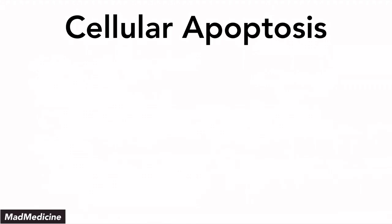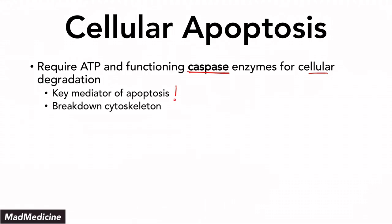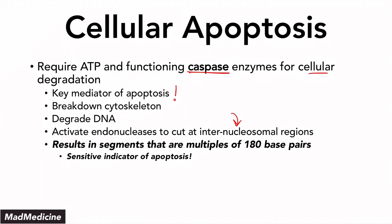Apoptosis actually requires ATP as well as functioning caspases — enzymes required for cellular degradation. The caspases are the key mediator of apoptosis. They're going to break down the cytoskeleton as well as degrade the DNA, and when they degrade the DNA, they also activate endonucleases that cut the DNA at the internucleosomal regions. What is high yield to remember is that when cellular apoptosis is occurring, this results in DNA segments that are multiples of 180 base pairs — a very sensitive indicator of apoptosis.